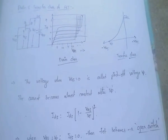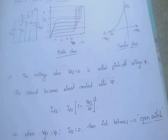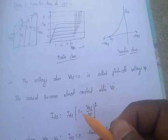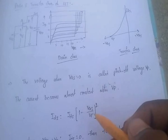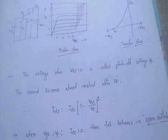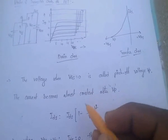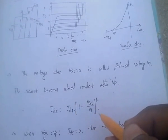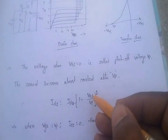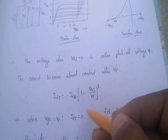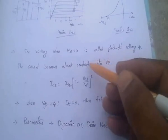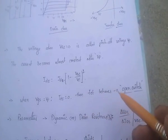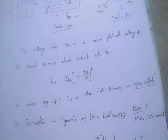The pinch-off voltage is denoted by VEP. The current becomes almost constant after this pinch-off voltage. The output current IDS equals IDSS into (1 minus VGS by VEP) whole square. When VGS equals VEP, IDS equals zero, and the FET behaves as an open switch.